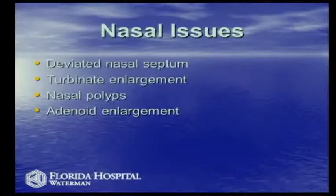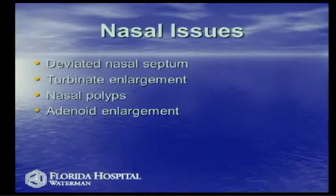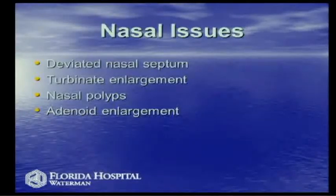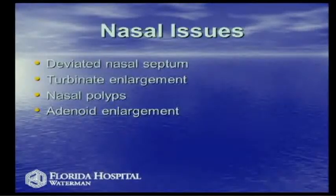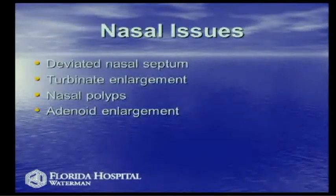Nasal issues are basically structural issues inside the nose. We'd like to see the nasal septum—the bone and cartilage wall that separates the two sides of the nose—to be straight. Many people have a deviated or crooked septum, and the side towards which it deviates creates more difficulty breathing and can affect the sinuses. The turbinates are bone and soft tissue growths inside the nose that help warm and humidify the air we breathe, and enlargement of them can contribute to nasal obstruction and sinus problems.